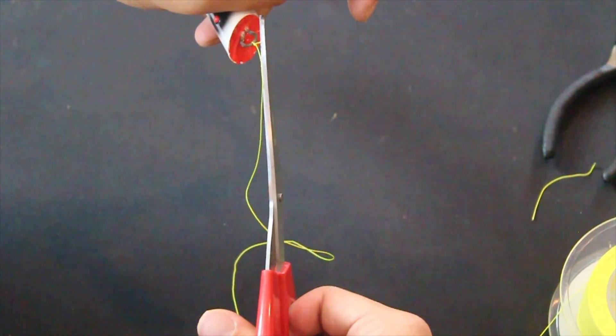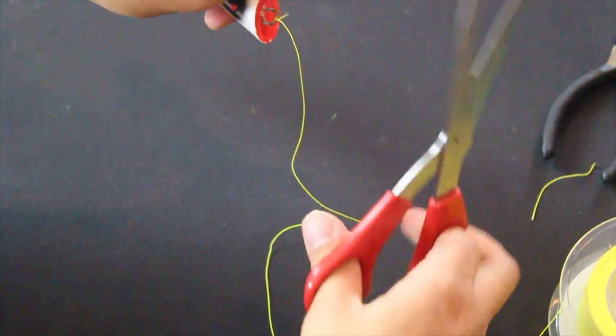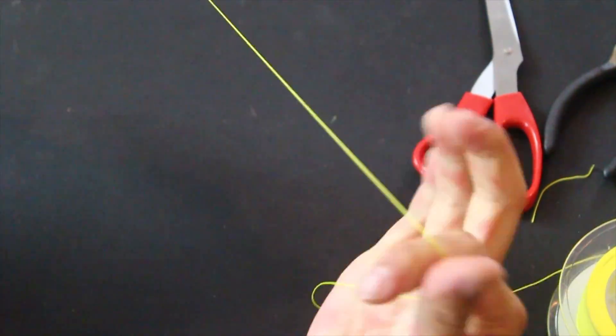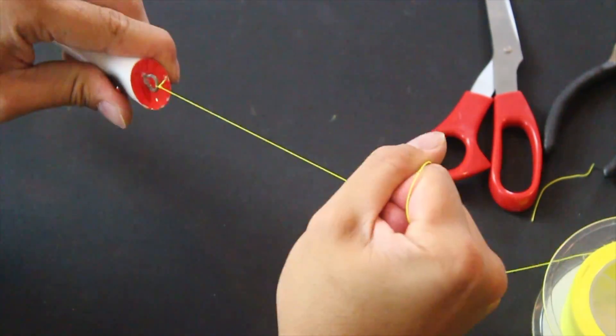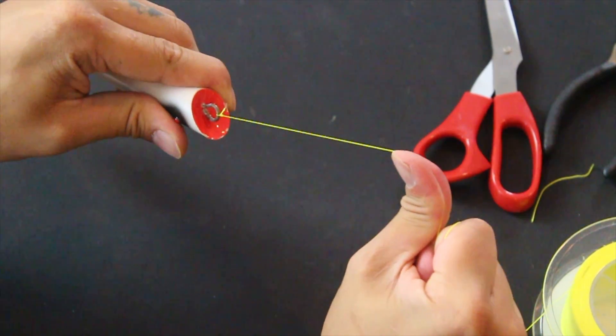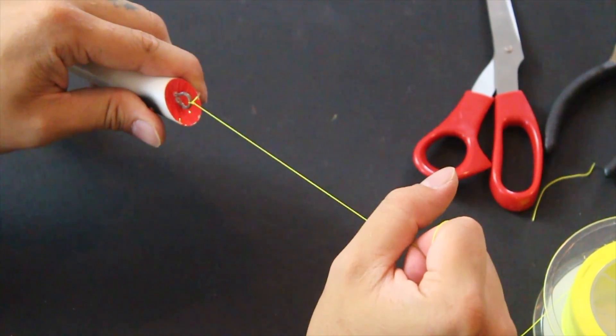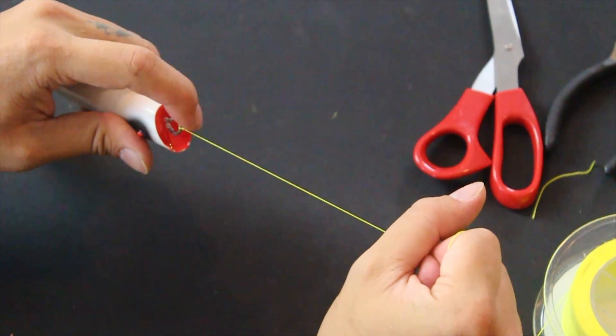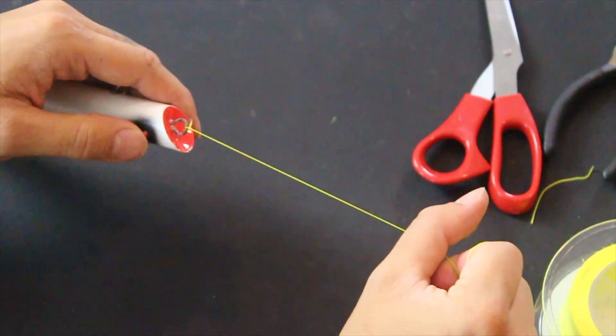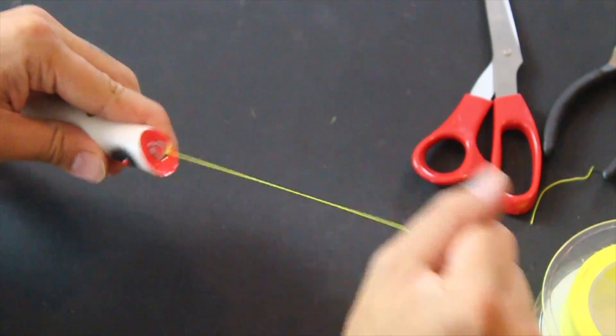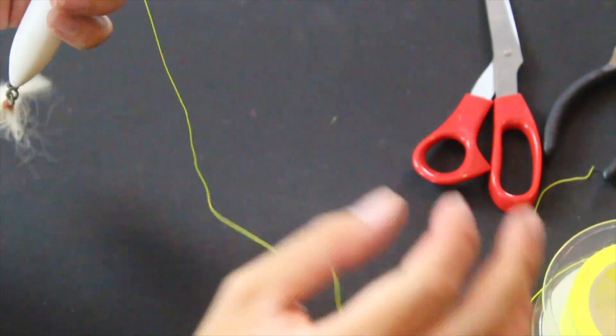I'm going to cut this tip off. So then just cut the tag end off. And this is an important step: test the strength of your knot. Don't just start fishing because sometimes you could have tied it wrong and the whole thing slips and you lose a big fish. It's happened to me before, trust me guys. You want to test your knots. And there you go.